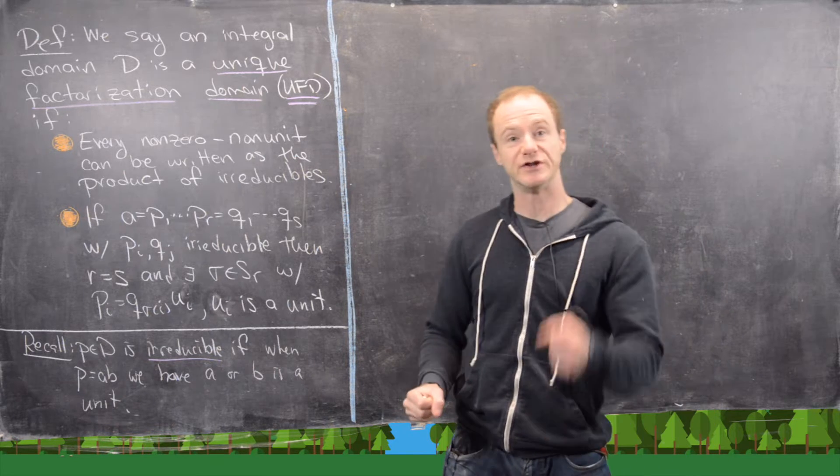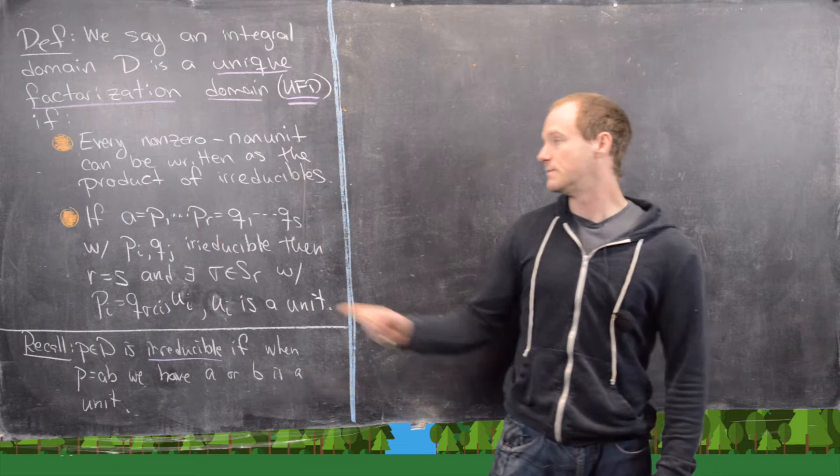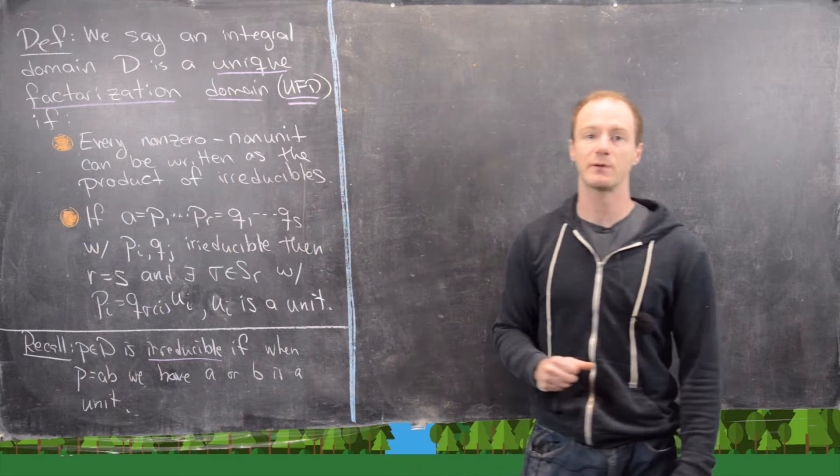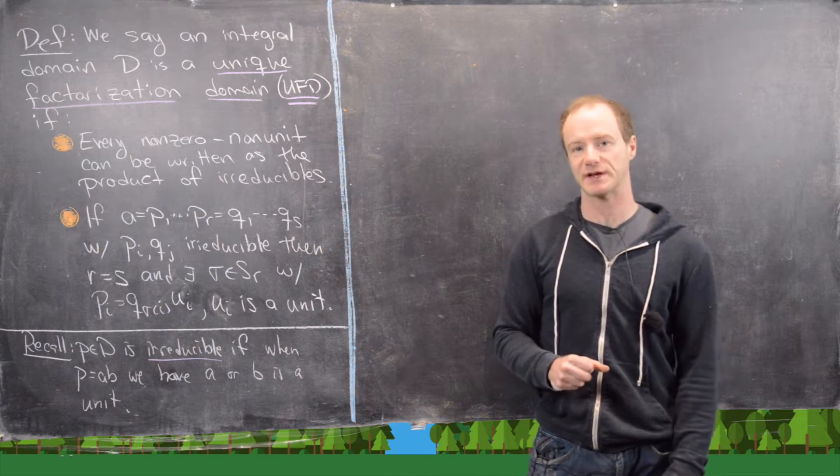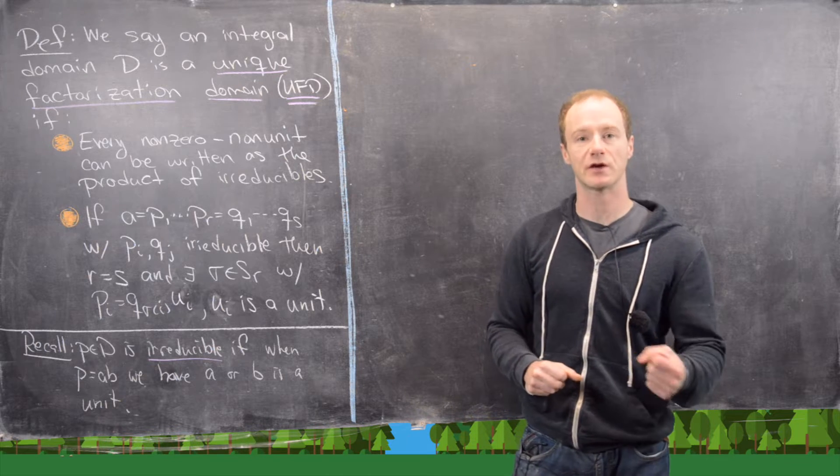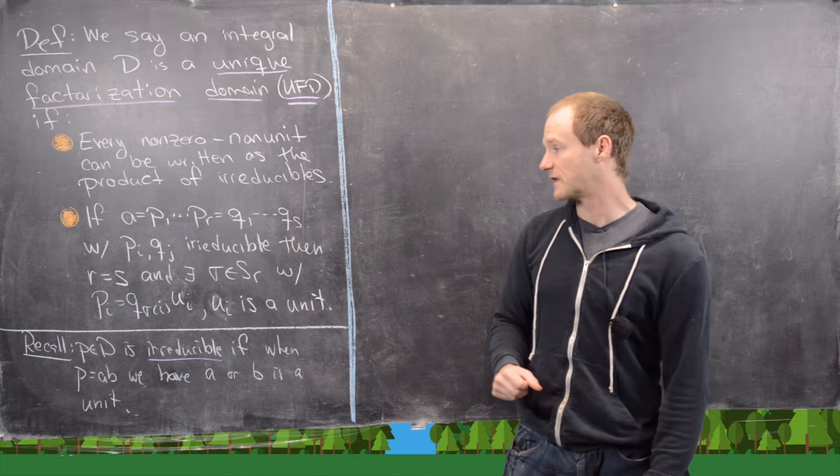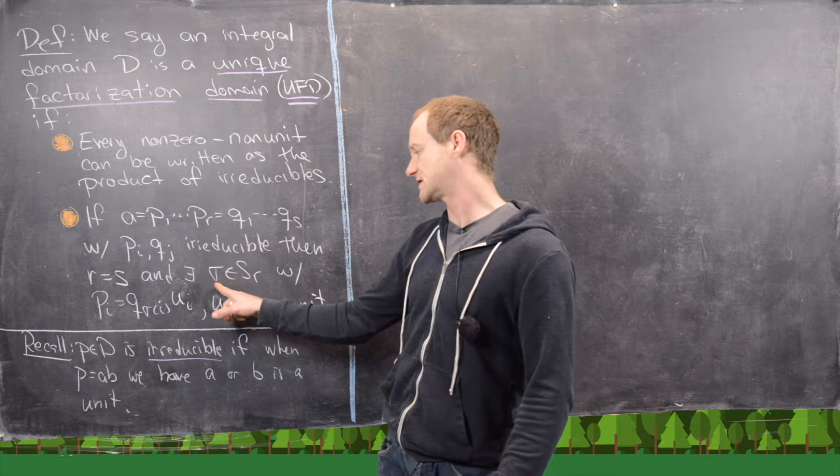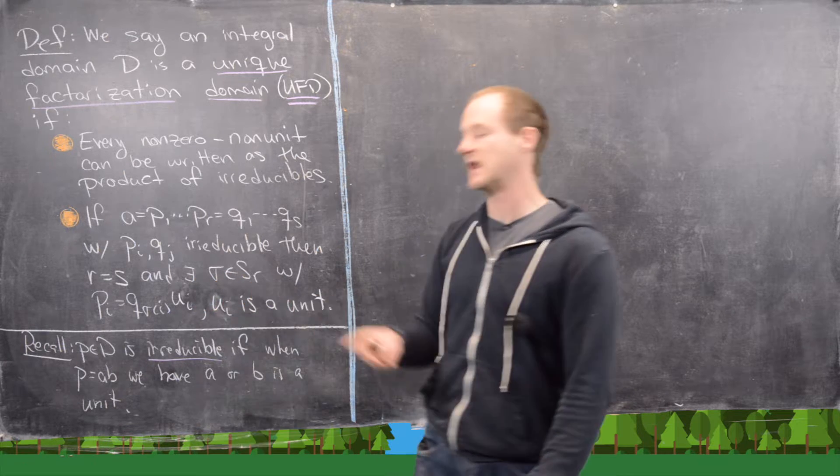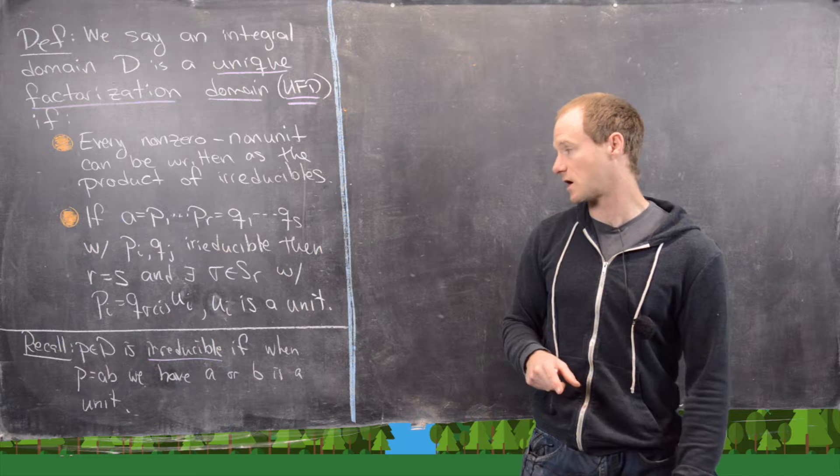And then furthermore, we do not require that these be the same list, but we require that they be the same list up to multiplication by a unit. And so we can write that down carefully in the following way. There exists a permutation sigma in SR, and so that's in the permutation group SR.